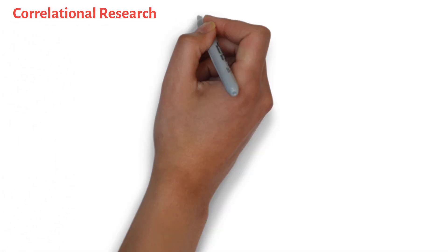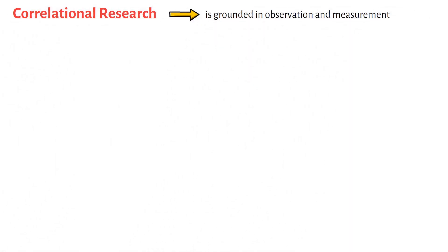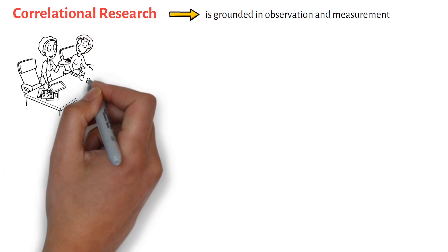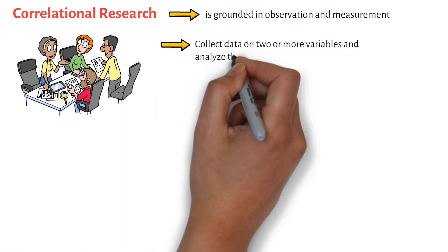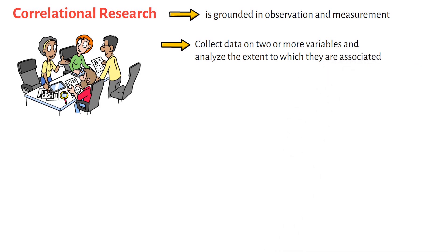Correlational research is grounded in observation and measurement. Researchers collect data on two or more variables and analyze the extent to which they are associated.